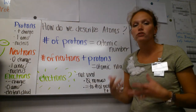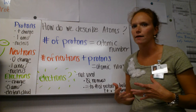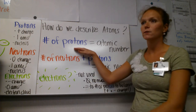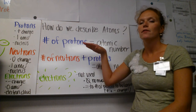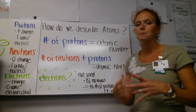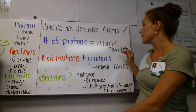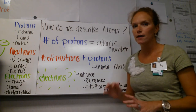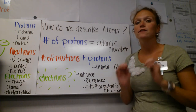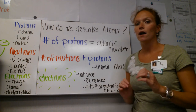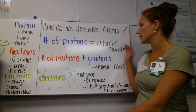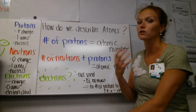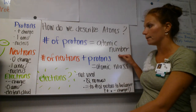We also need to describe these atoms — how do we talk about them? The first way is by the number of protons. The number of protons represents a special number called the atomic number. This is the defining number of that atom. The atom is defined by its number of protons, and we refer to that as the atomic number.